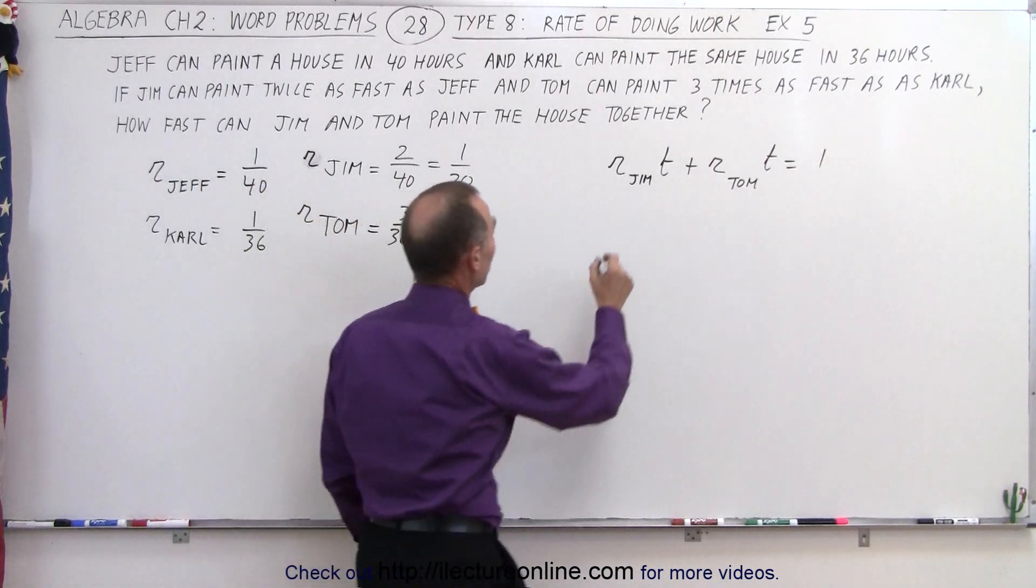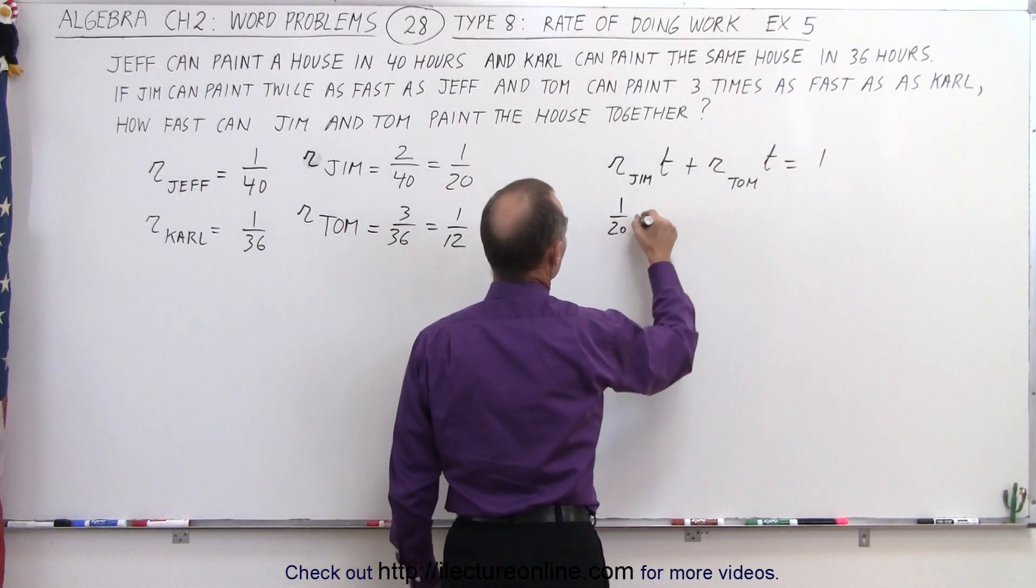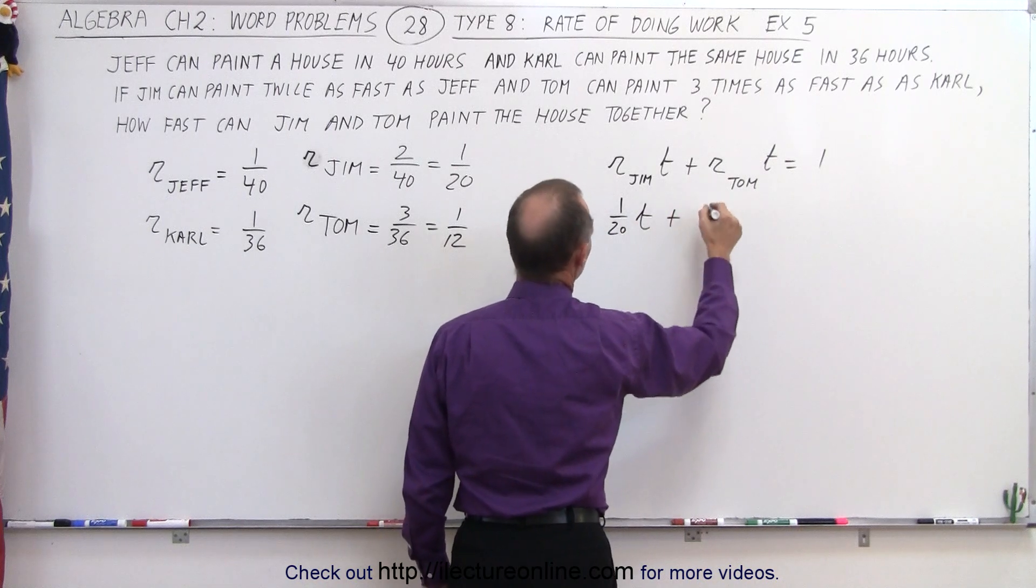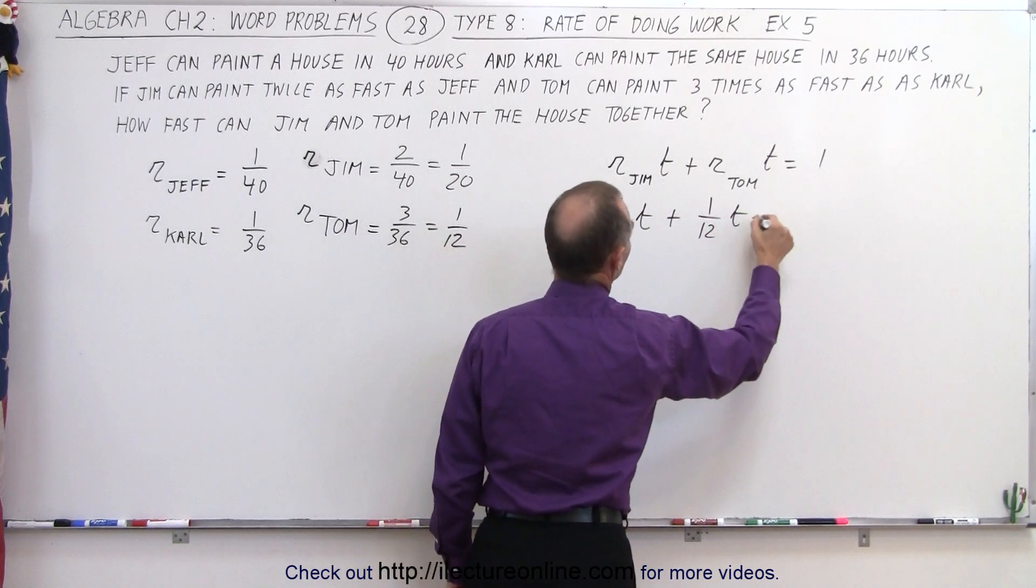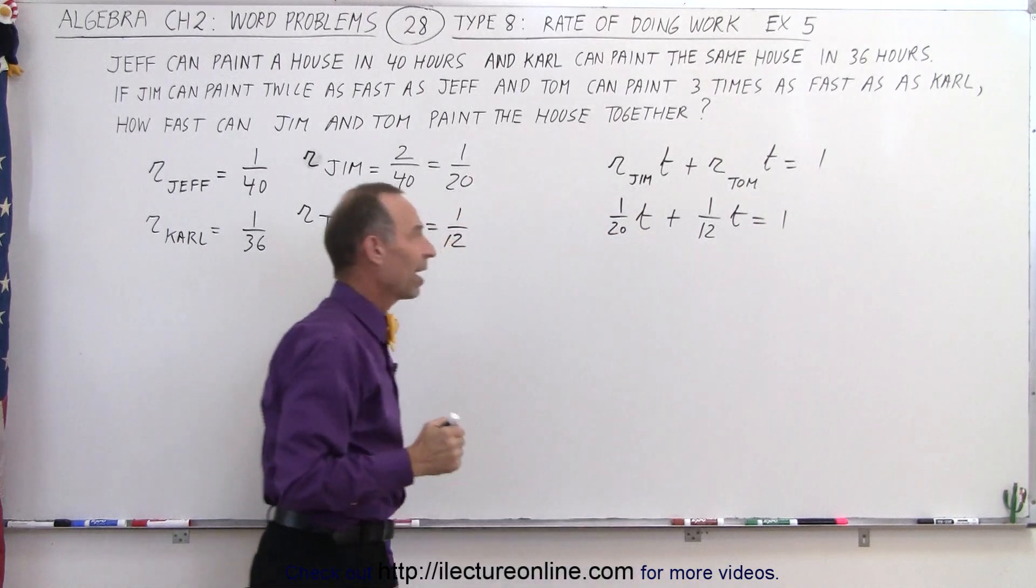And the rate of Jim was established to be 1 over 20, plus the rate of Tom, which is 1 over 12. And that gets the whole job done.